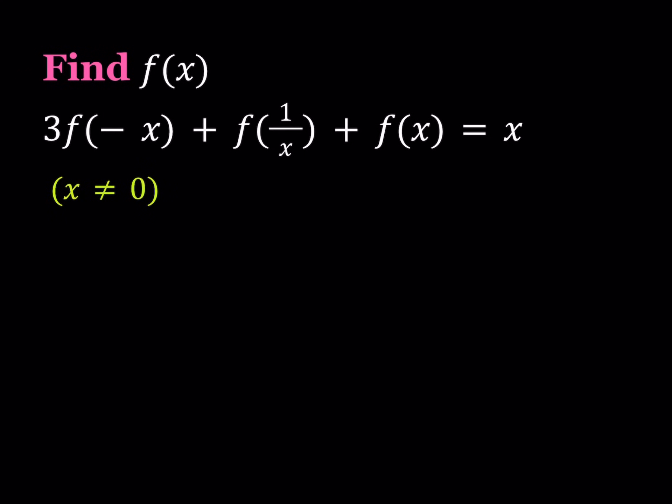Hello everyone. In this video we're going to be solving an interesting functional equation. We are given 3 times f of negative x plus f of 1 over x plus f of x equals x, where x does not equal 0 for obvious reasons, and we're supposed to find f of x.